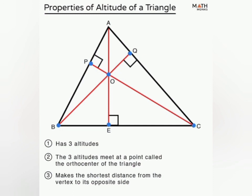The altitude represents the shortest distance from a vertex to its opposite side.